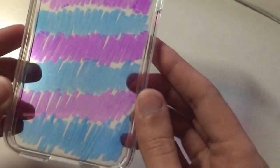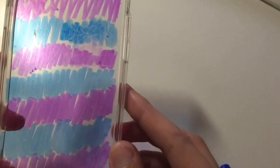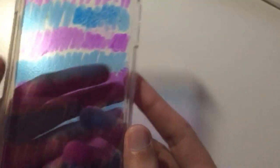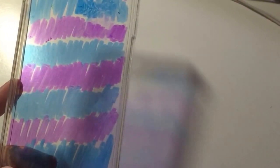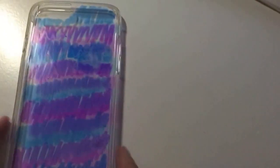The neat thing too is if you don't like your design, you can actually use sanitizer to get it off as long as you don't let it dry too long. You can just put some sanitizer on a tissue and wipe it off. It comes off super easy and you can start over. You just want to let it dry first. So there you go!